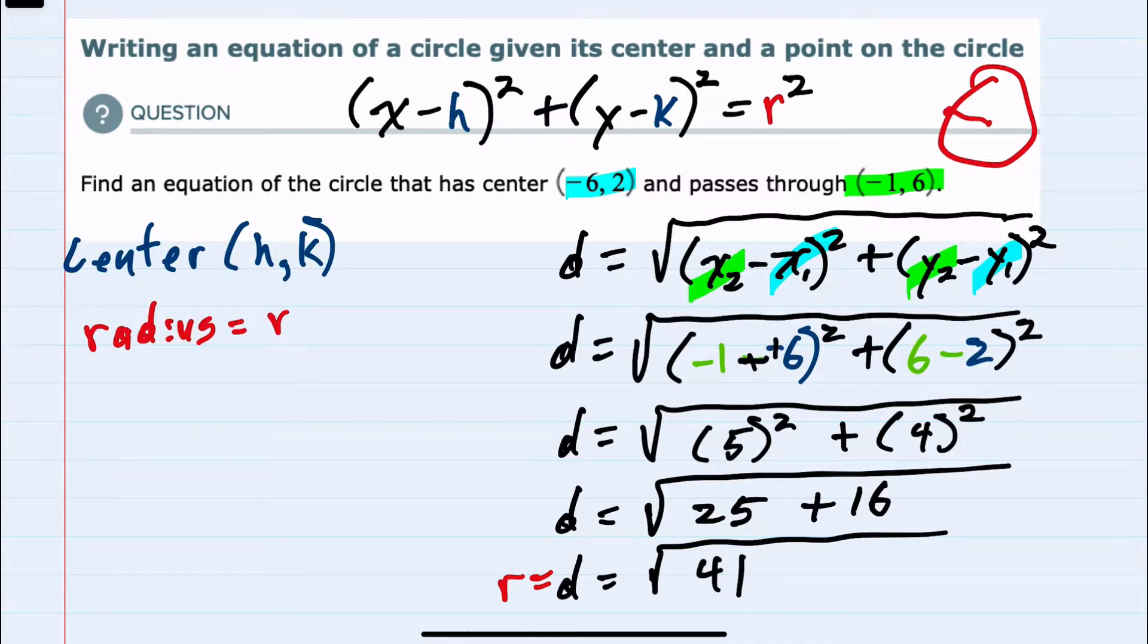So I can now plug in to our standard equation: the equation of this circle is x minus h which is -6, and since it's minus a -6, I'm going to write this as (x + 6)² plus (y - k)².